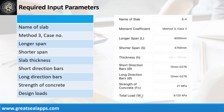Enumerate input parameters required. Name of slab: S4. Case 2 panel design. Longer span: 6,000 mm. Shorter span: 5,700 mm. Slab thickness: 130 mm. Main bars: 12 mm bar at grade 276. Strength of concrete: 21 MPa. Total load: 9.12 kPa.